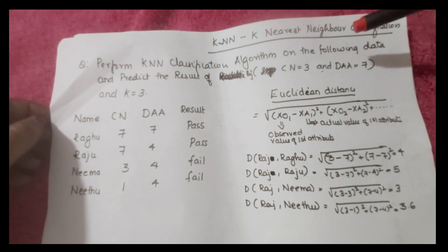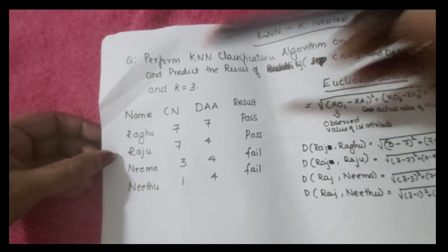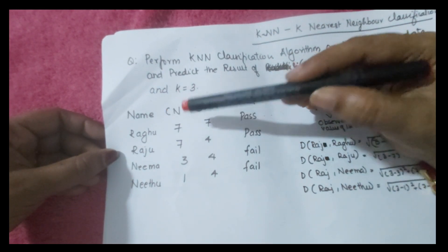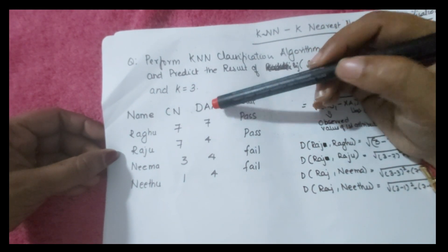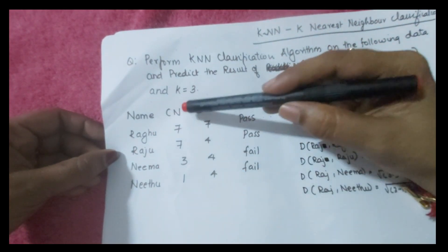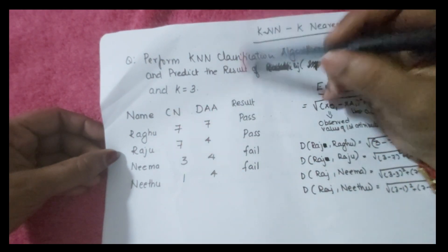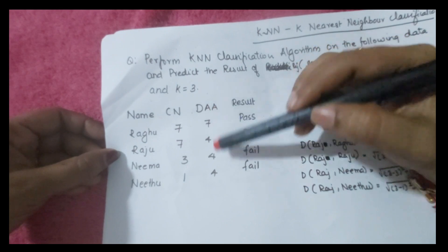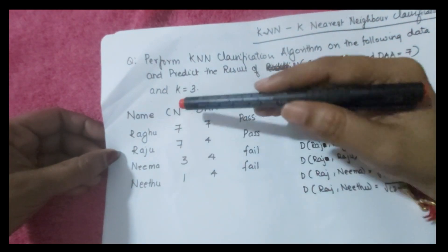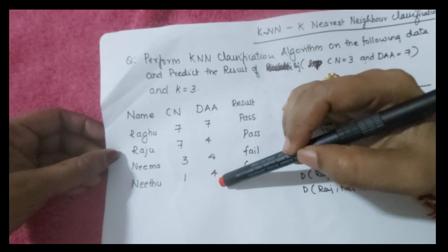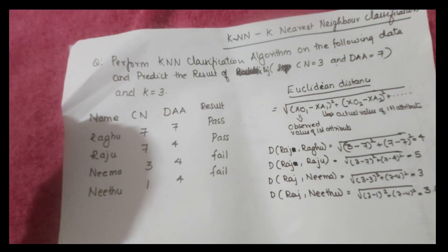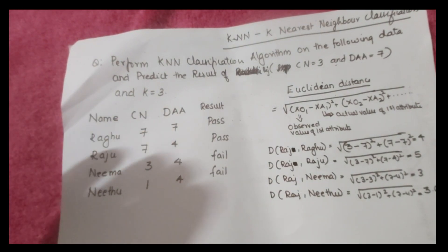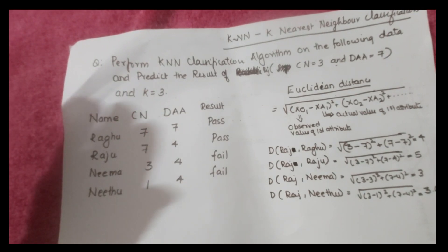The training data is: Ragu — CN: 7, DA: 7, Result: Pass; Raju — CN: 7, DA: 4, Result: Pass; Neema — CN: 3, DA: 4, Result: Fail; Neetu — CN: 1, DA: 4, Result: Fail. We will compare Raj against Ragu, Raju, Neema, and Neetu by finding the Euclidean distance between them.